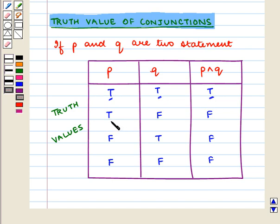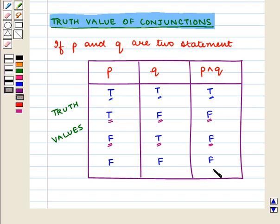If either of the statements P or Q is false, then the conjunction P ∧ Q is false. If the truth value of P is T and the truth value of Q is F, then the truth value of P ∧ Q is F. Similarly, if the truth value of P is F and the truth value of Q is T, or if both P and Q are F, then the truth value of P ∧ Q is F.